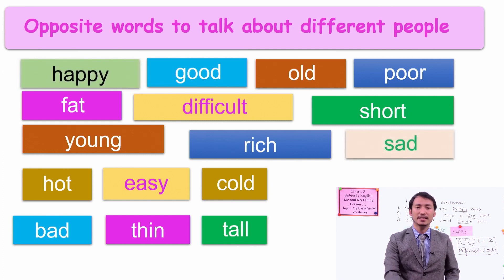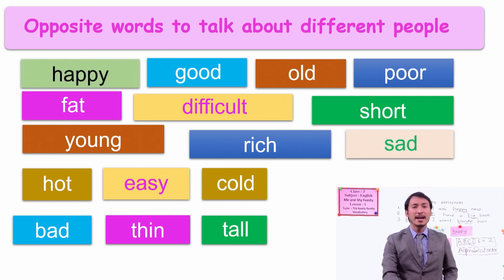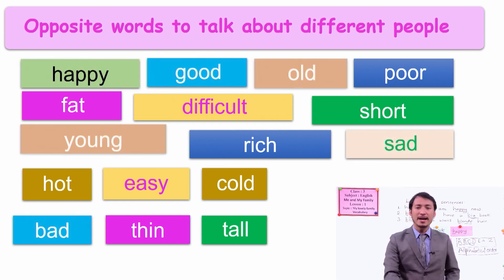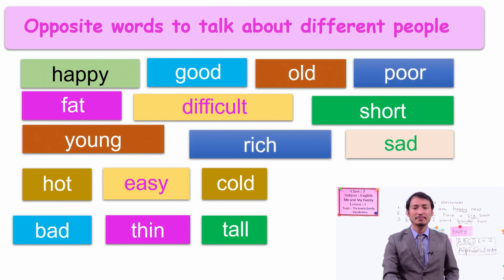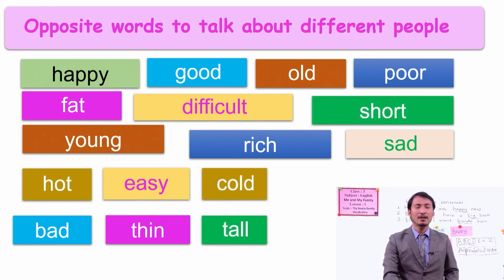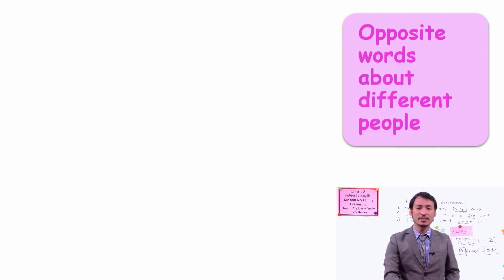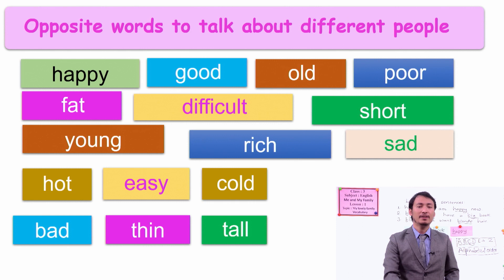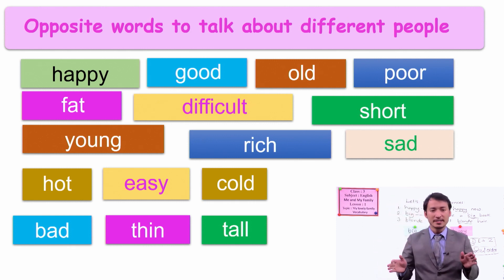Look at these flashing words — can you see? Happy and sad, good and bad, old and young, poor and rich, fat and thin, difficult and easy, short and tall, hot and cold. So these are all opposite words.